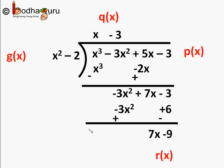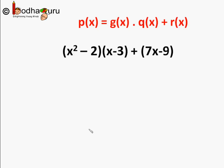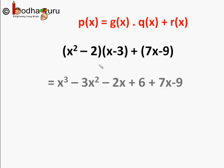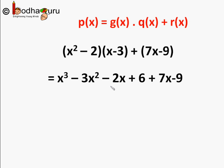Now let us put it in the formula: p(x) equals g(x) times q(x) plus r(x). The right-hand side becomes x squared minus 2, times x minus 3, plus 7x minus 9. Multiplying x minus 3 with every term of x squared minus 2 gives x cubed minus 3x squared minus 2x plus 6. Adding 7x minus 9 simplifies to x cubed minus 3x squared plus 5x minus 3, which equals our original dividend.